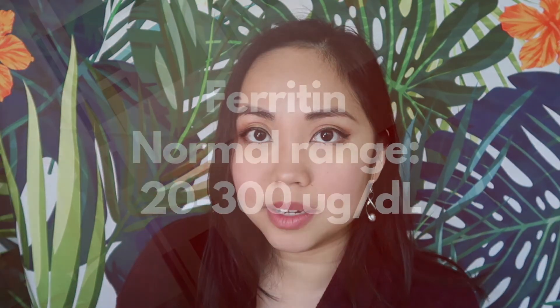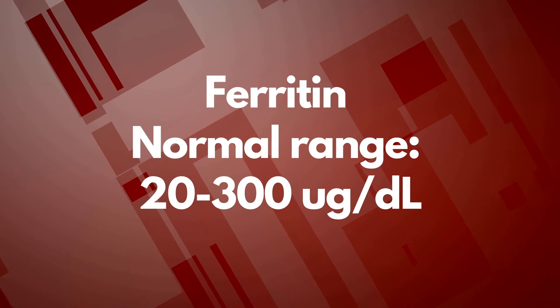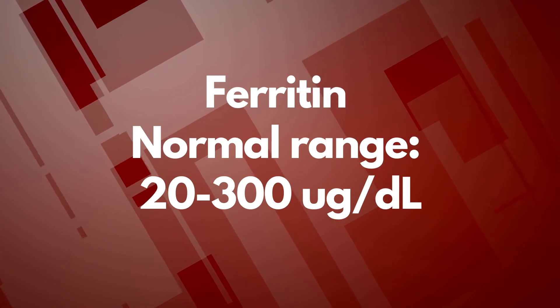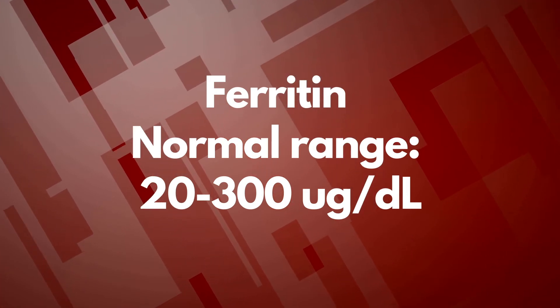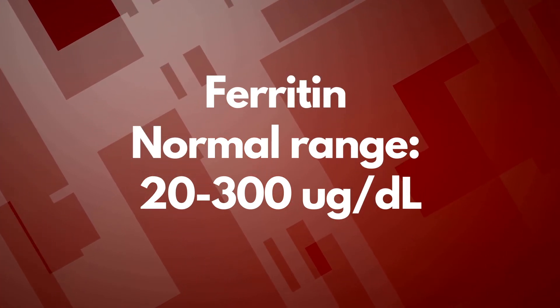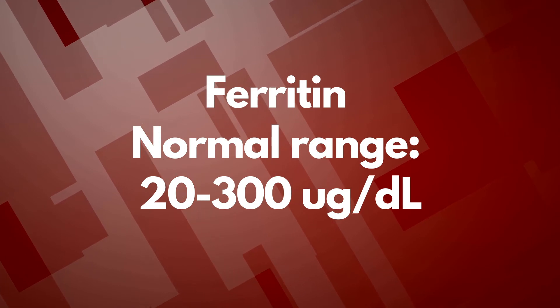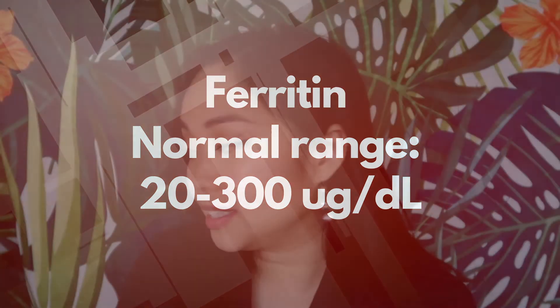Lastly, we have ferritin, which is also measured in the lab. The normal range for ferritin is between 20 and 300 micrograms per deciliter — yes, that's a pretty big range. This is actually a better gauge of the condition of iron stores in the body compared to measuring serum iron or TIBC.